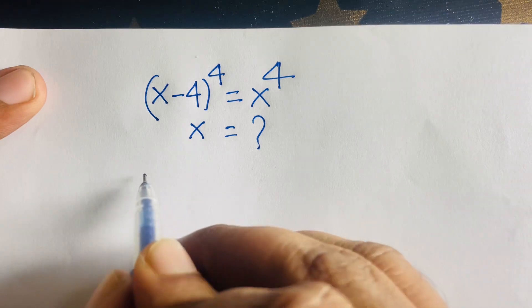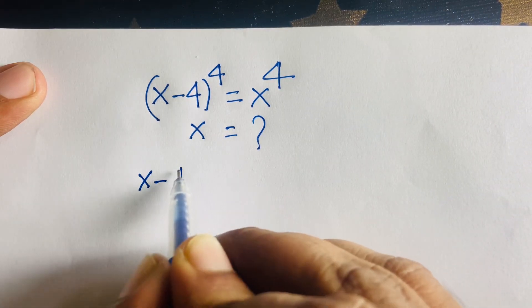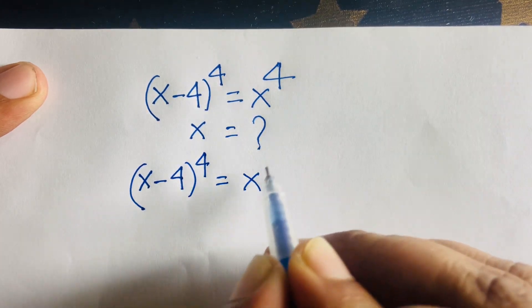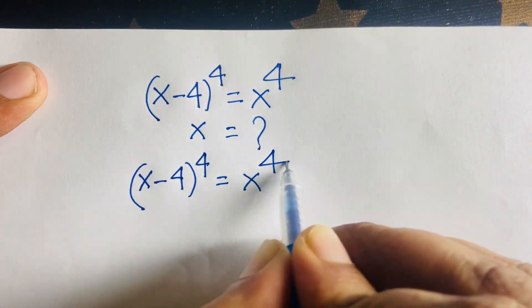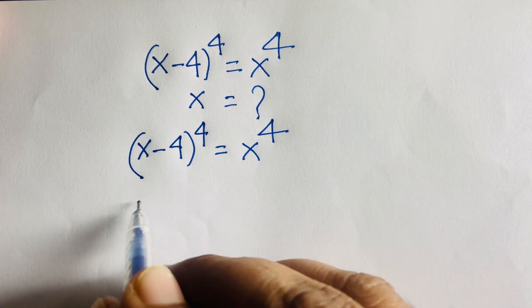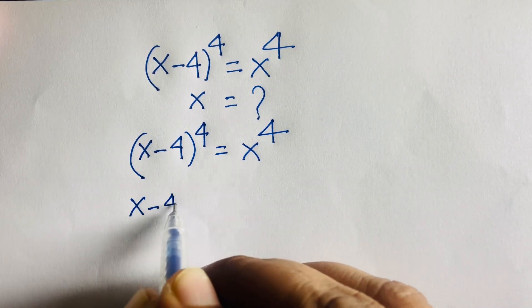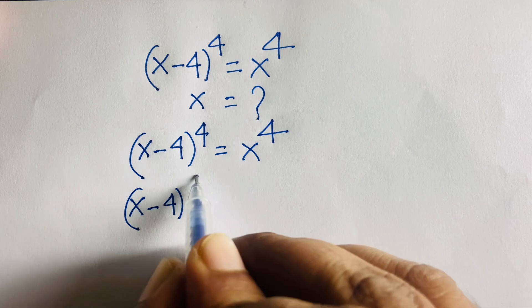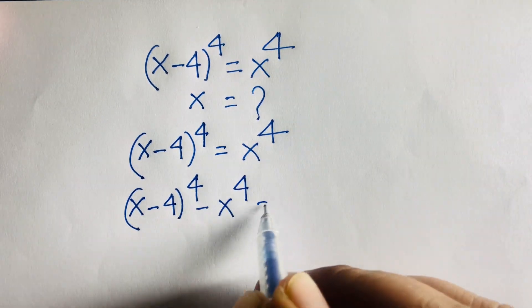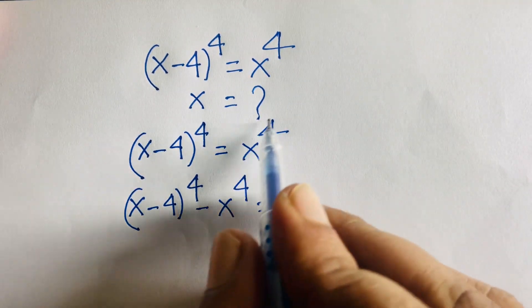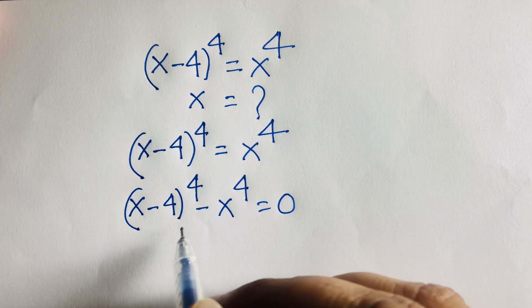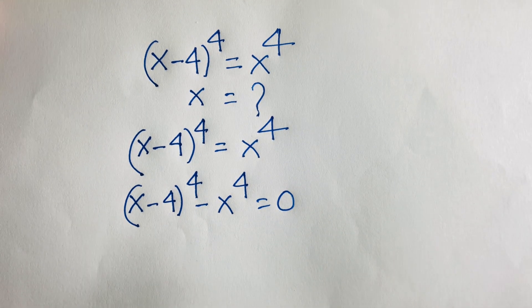Our question is (x minus 4) whole to the power 4 is equal to x to the power 4. This equation becomes (x minus 4) whole to the power 4 minus x to the power 4 is equal to 0. We move x to the power 4 to the left side, giving us minus x to the power 4.